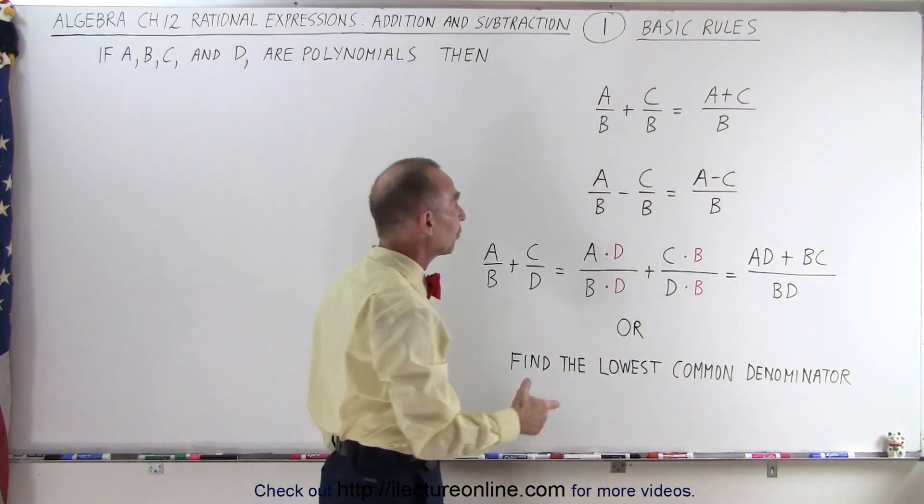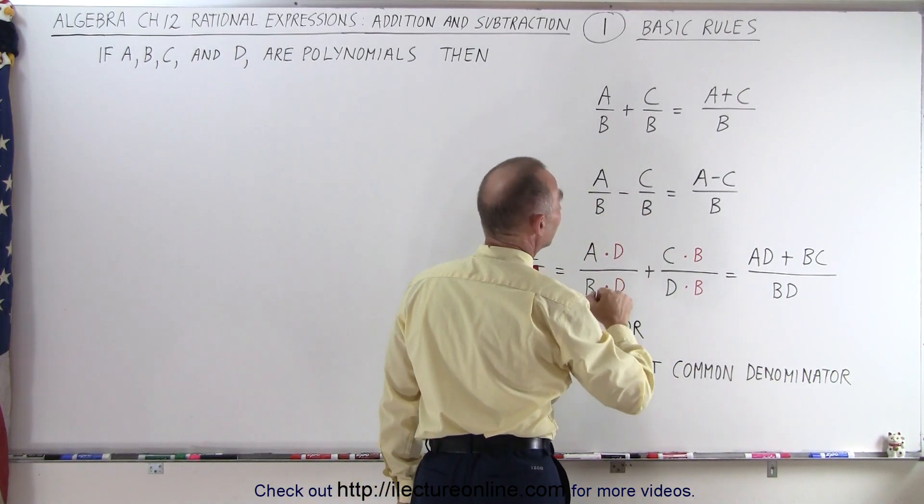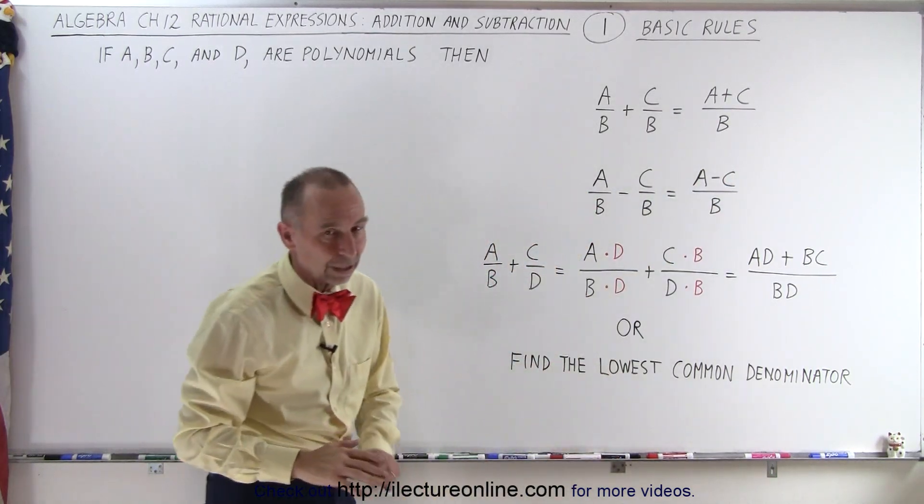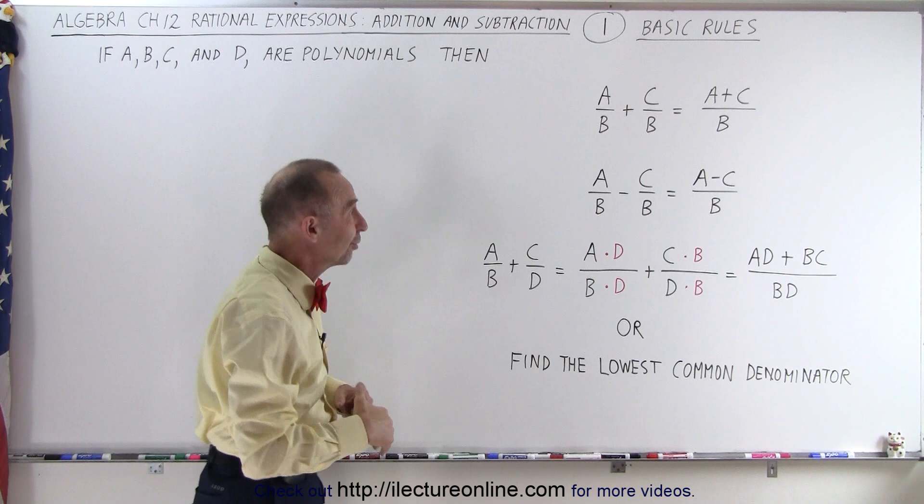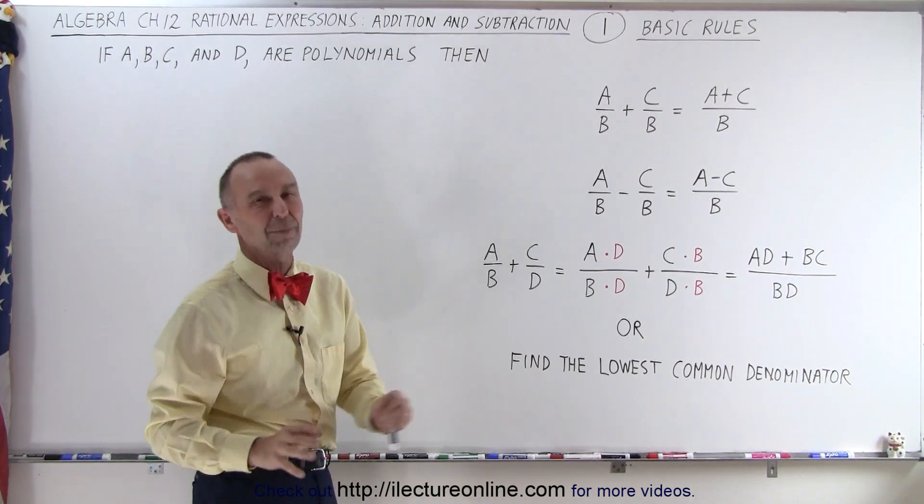And the same thing applies when we're subtracting. When the denominators are the same, it is fairly easy. We can simply write the difference of the two polynomials over the same common denominator. So that makes it pretty easy. The first thing we do is make sure if the denominators are the same, it's a piece of cake.